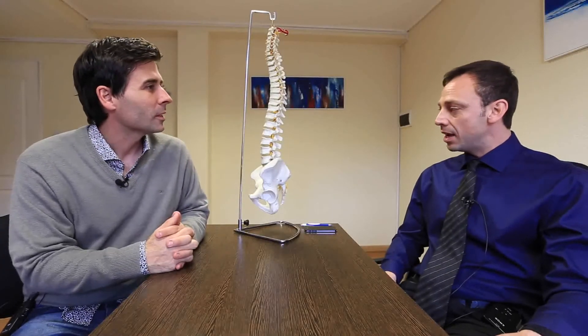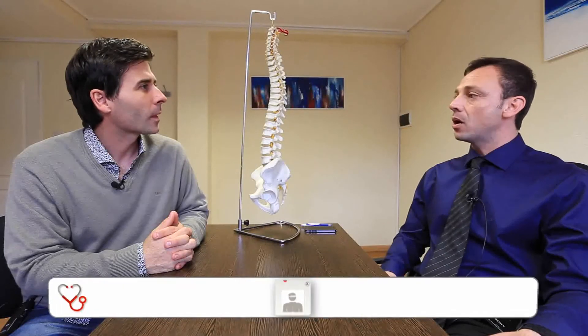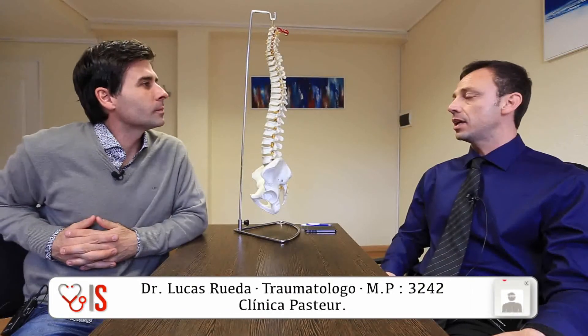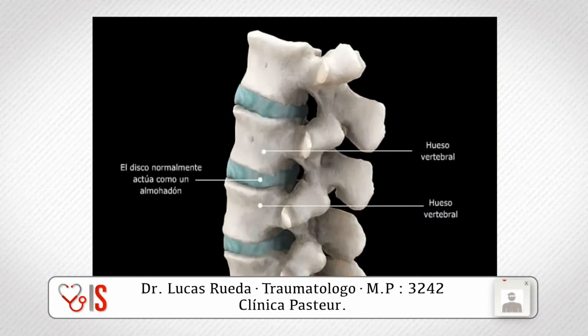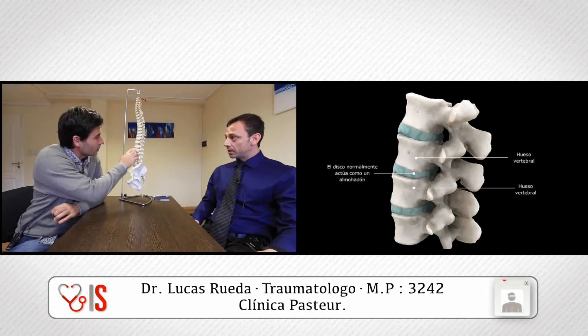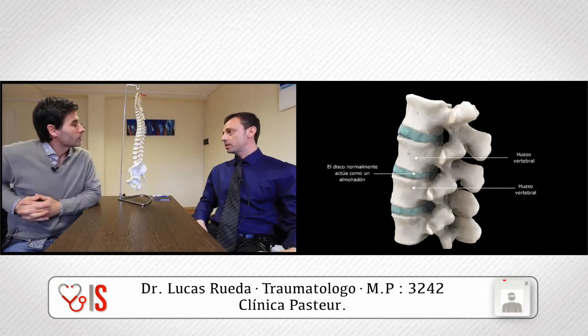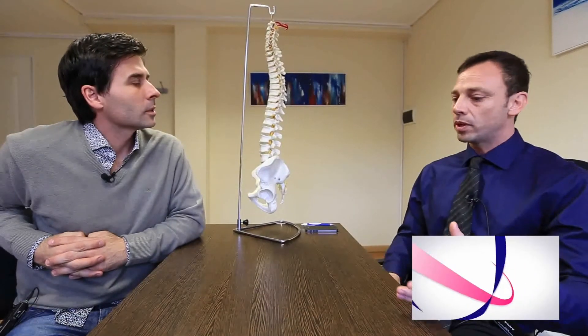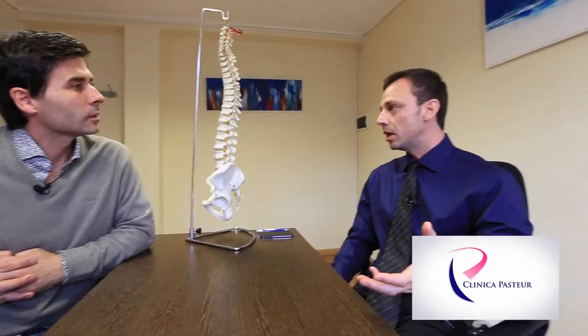Vamos por parte entonces, empecemos con estas enfermedades del disco en la columna. En general, una de las enfermedades más comunes es la enfermedad discal: significa que el disco intervertebral, que es lo que está entre una vértebra y otra y que funciona como un amortiguador natural, se desgasta. Exactamente, entre la vértebra y la vértebra tenemos ese amortiguador natural. Cuando eso se desgasta hay un proceso normal de desgaste, pero cuando ese proceso se acelera por una cuestión genética, por un trauma, por un golpe o algo, ahí ya empieza a causar un problema.